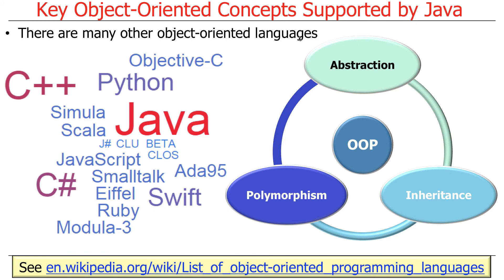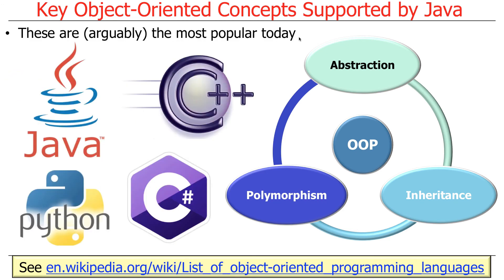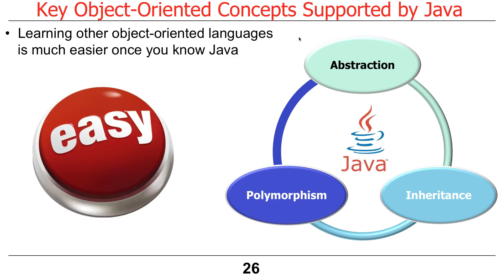There are lots of other object-oriented programming languages — Python, Objective-C, C-sharp, Swift, C++, and so on. Java has been the most popular language for a while, although others keep trying to steal its thunder. Arguably the most popular OO languages today are Java, C++, C-sharp, and Python. You could make a case for some other things, but that's probably what you'd find.